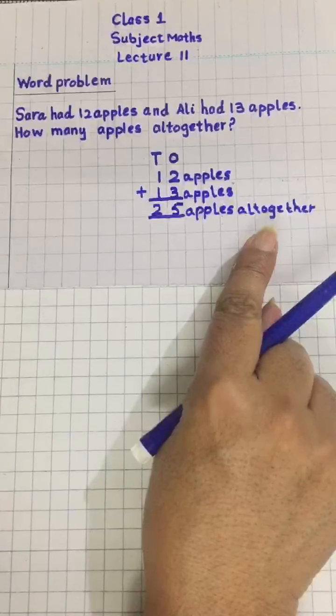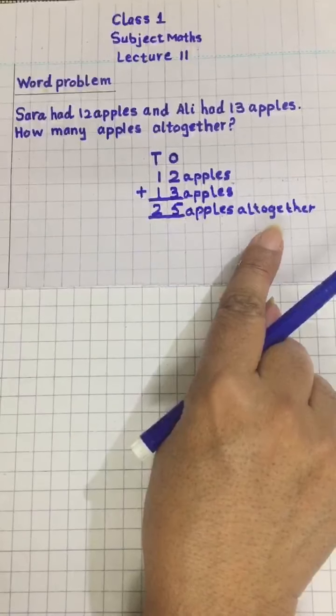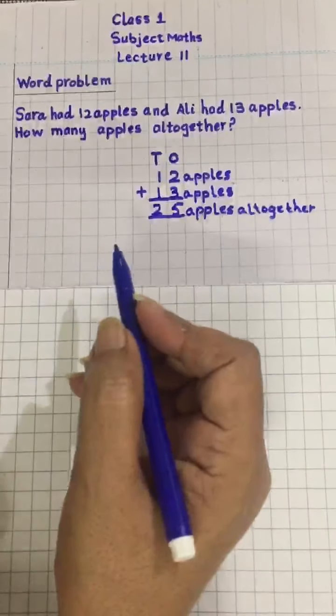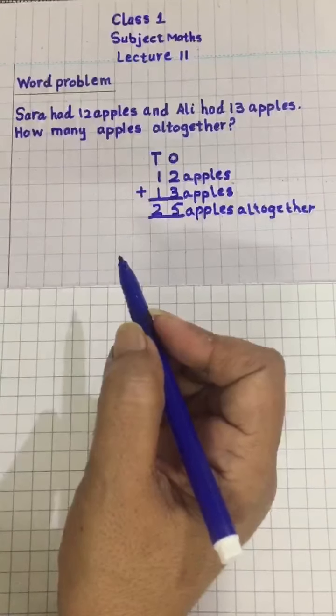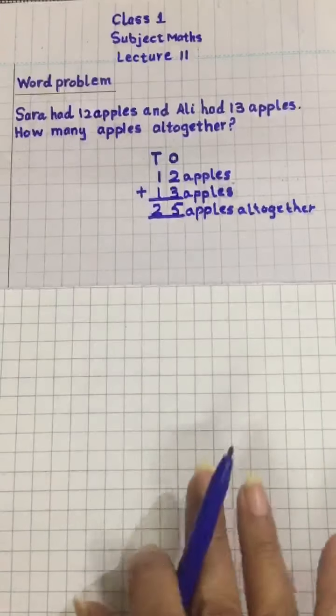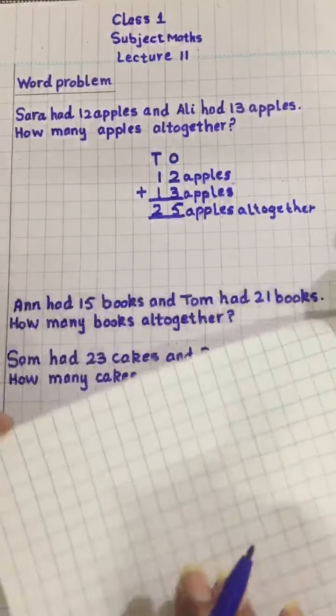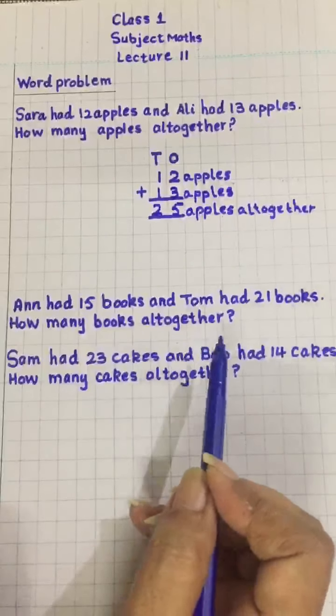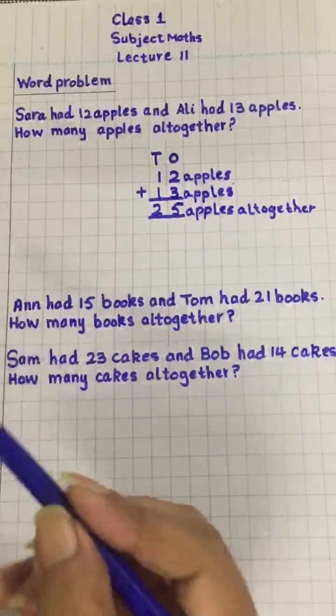All together - you have to write 'all together' with the answer. Children, I hope you have understood. I have two sums for your homework. Do them in neat copies. First I will read.